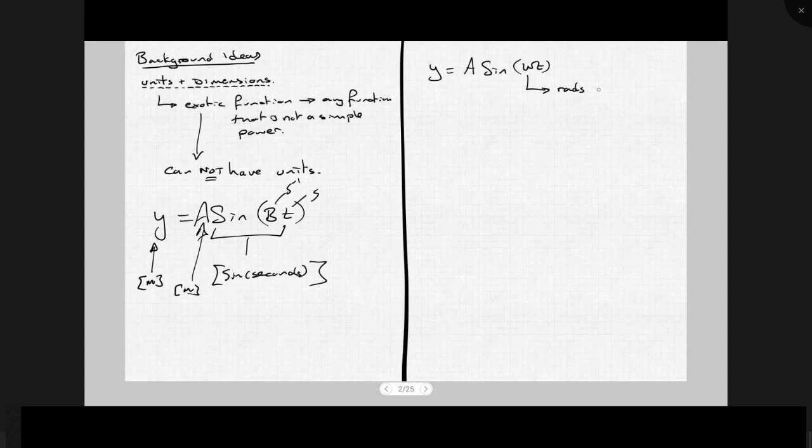Another one, N equals N naught. This is radioactivity. E to the minus lambda t. Now, lambda is not the wavelength.